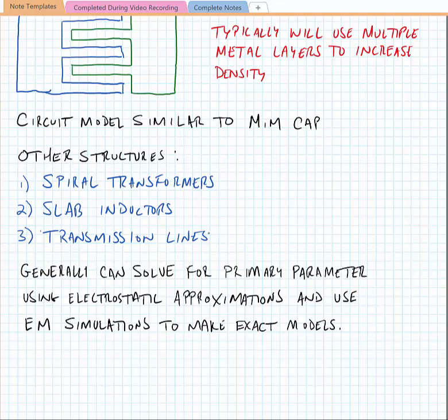Generally we can create any of these structures using the basic spiral or a similar geometry. A slab inductor is just a long metal trace and a transmission line is also just a long metal trace, albeit where the electric length is fairly significant.